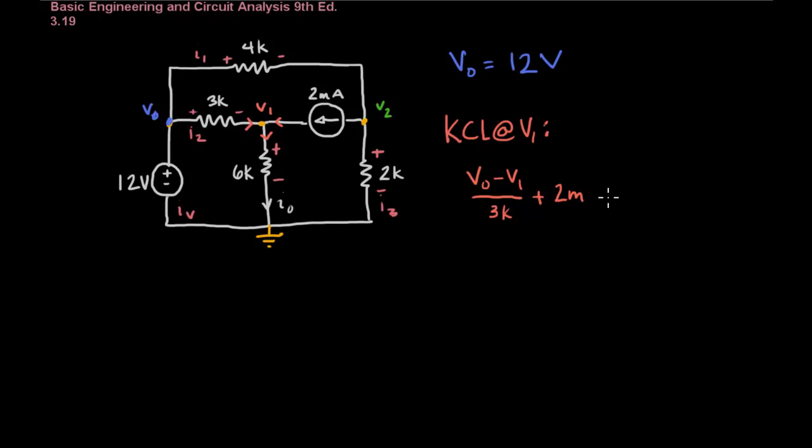So V0 is at a higher potential because of the current direction that we've chosen. So it's going to be V0 minus V1 over 3K. And then plus 2M, because that's also going in. And then going out of the node we assign a negative. And that's going to be V1 minus zero because of our current, it just happens that V1 is a higher potential than our ground. So it's going to be V1 over 6K equals zero.